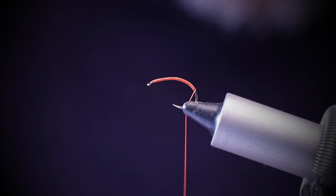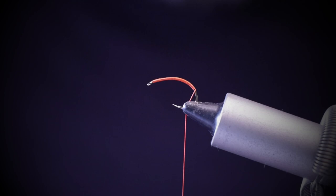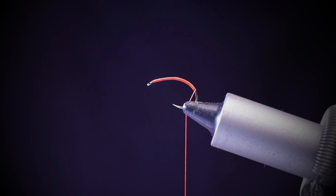At this point we want to take our uni floss and tie in a decent length. We're going to use this for two things: the rib and also for the body. So take a length about 10 inches.